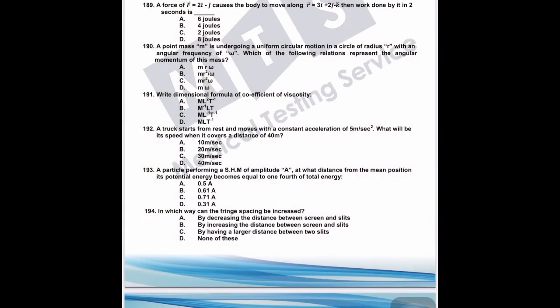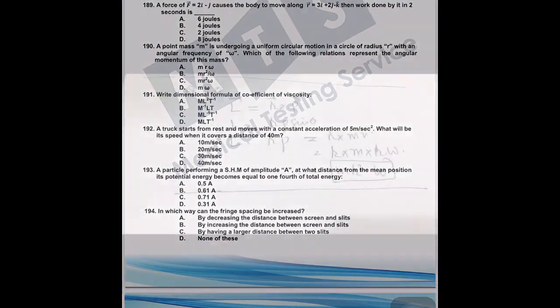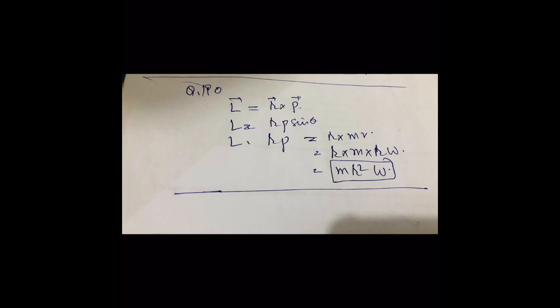Question 190: a point mass m undergoes uniform circular motion of radius r with angular frequency ω. The angular momentum L = r × p × sinθ. At 90°, L = r·p = r·mv. Since v = rω, L = r·m·rω = mr²ω.